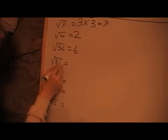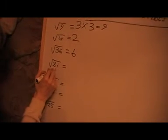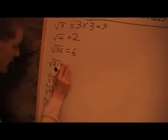And this one, I need to find a number that when I times it by itself, I get 81. And that's 9. If I do 9 times 9, I get 81.